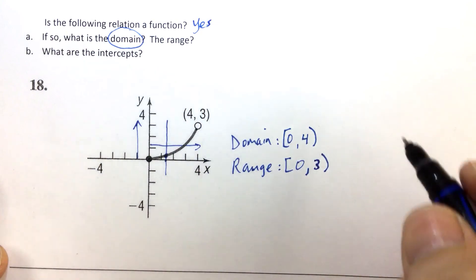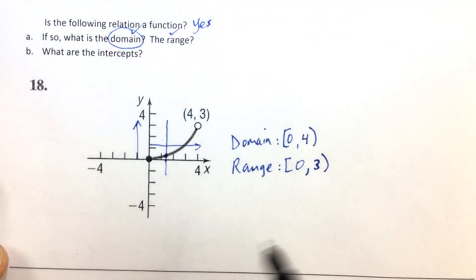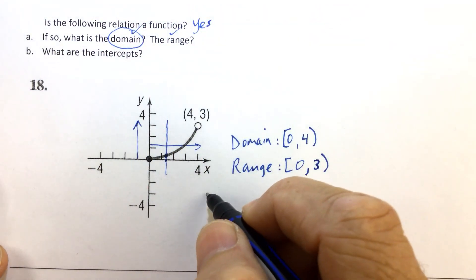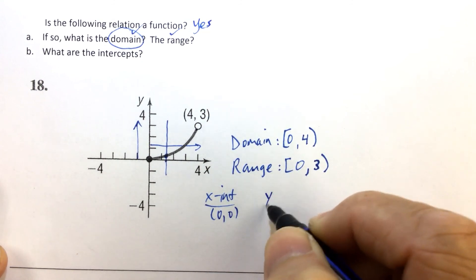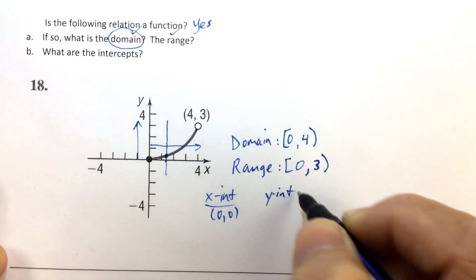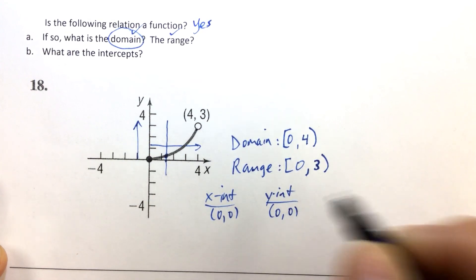Oh, almost forgot. So we took care of the domain, took care of the range, and what are the intercepts? The x-intercept we can clearly see is (0, 0). Well, it's the same as the y-intercept. Y-intercept, also (0, 0).